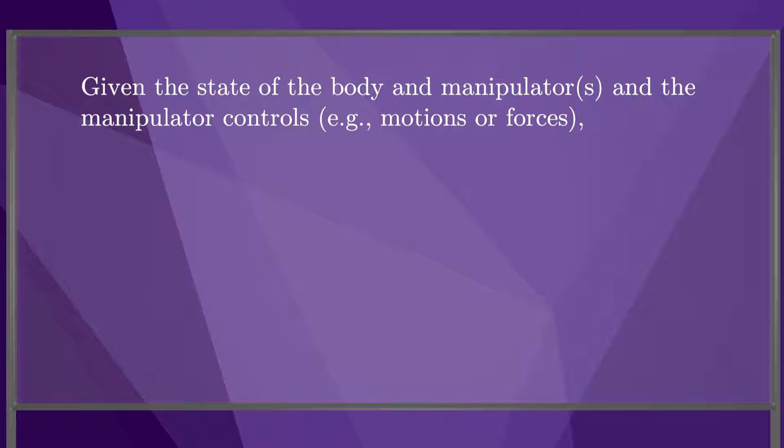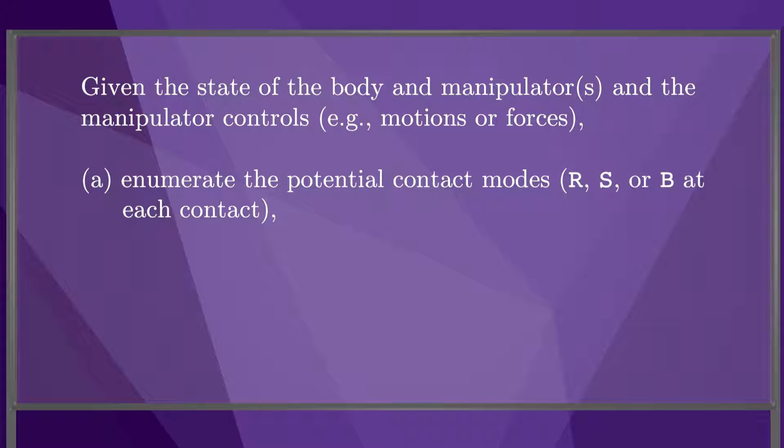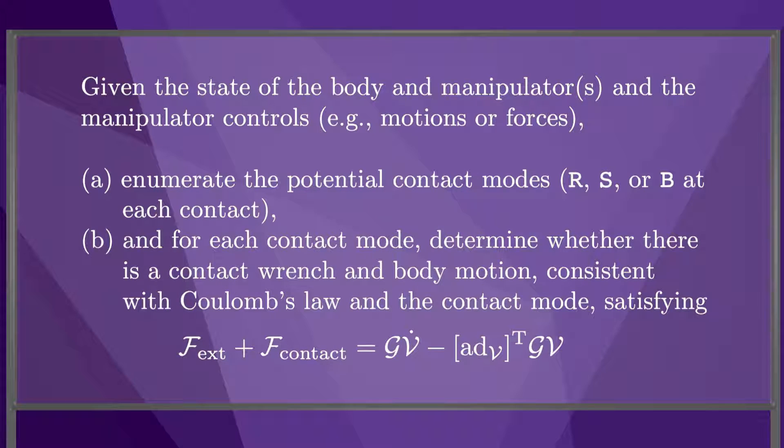Given the state of the body and manipulator and manipulator motions or forces, first enumerate the potential contact modes that could hold at this instant, and then for each contact mode determine whether there is a contact wrench in body motion, consistent with Coulomb's law and the contact mode, satisfying the equation of motion.